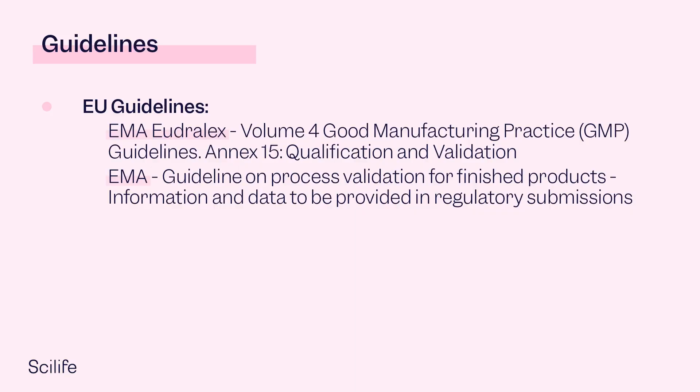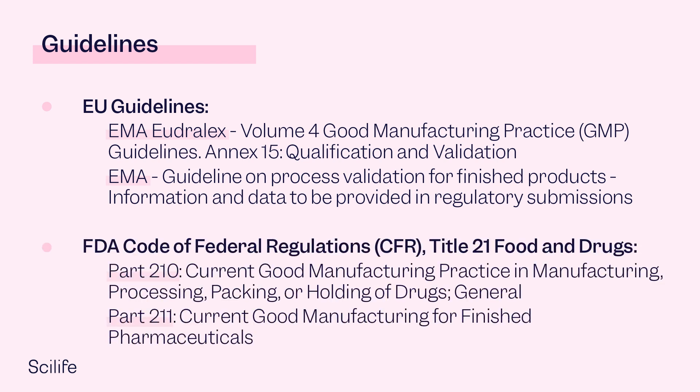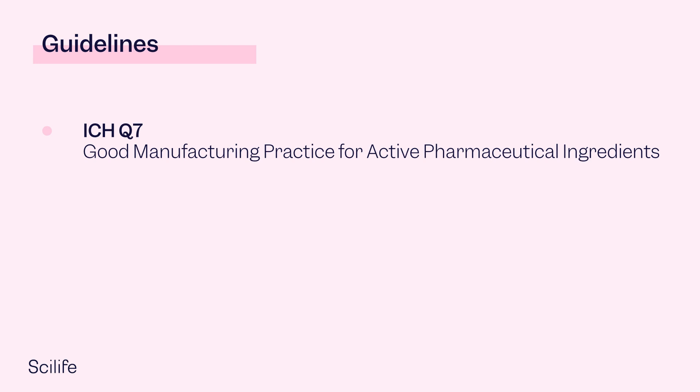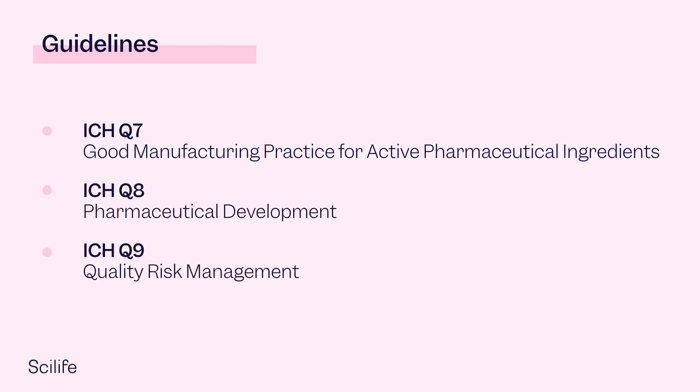Let's take a look at the most important regulations and guidelines. EU-GMP Annex 15 describes that qualification activities are to be considered in all stages, from initial development of the user requirement specification through to the end of use of the equipment, facility, utility or system. Let's see what the definition of process validation is according to Annex 15.